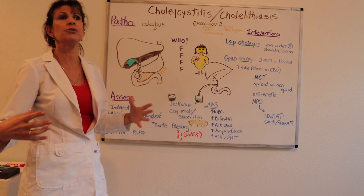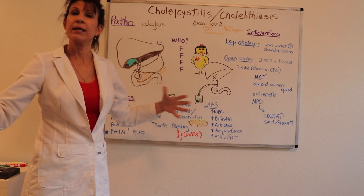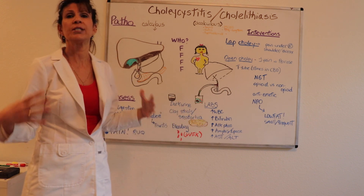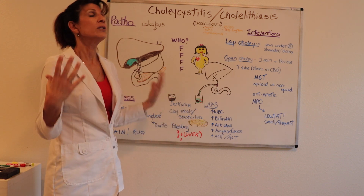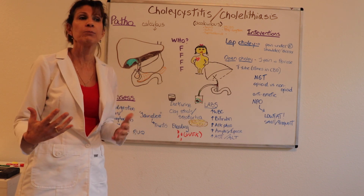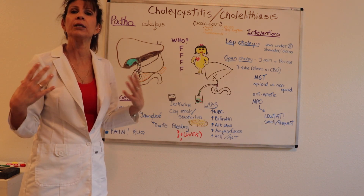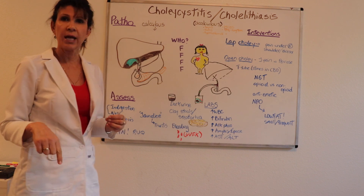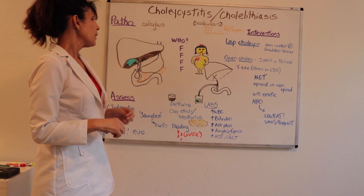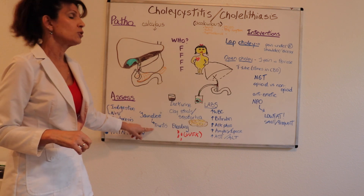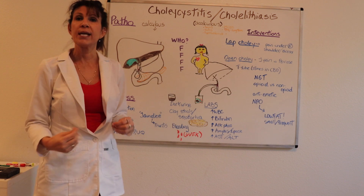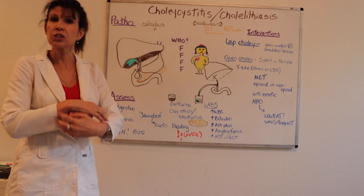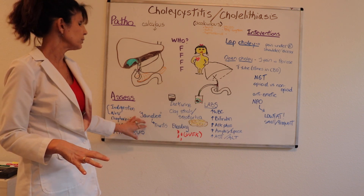The bilirubin is absorbed into the tissues and excreted by the largest excretory organ, which is the skin. Depending on how much has been absorbed, patients will take on a yellowish hue, which you can also see in the conjunctiva of their eyes. This is also associated with pruritus, secondary to the bile salts that are excreted.